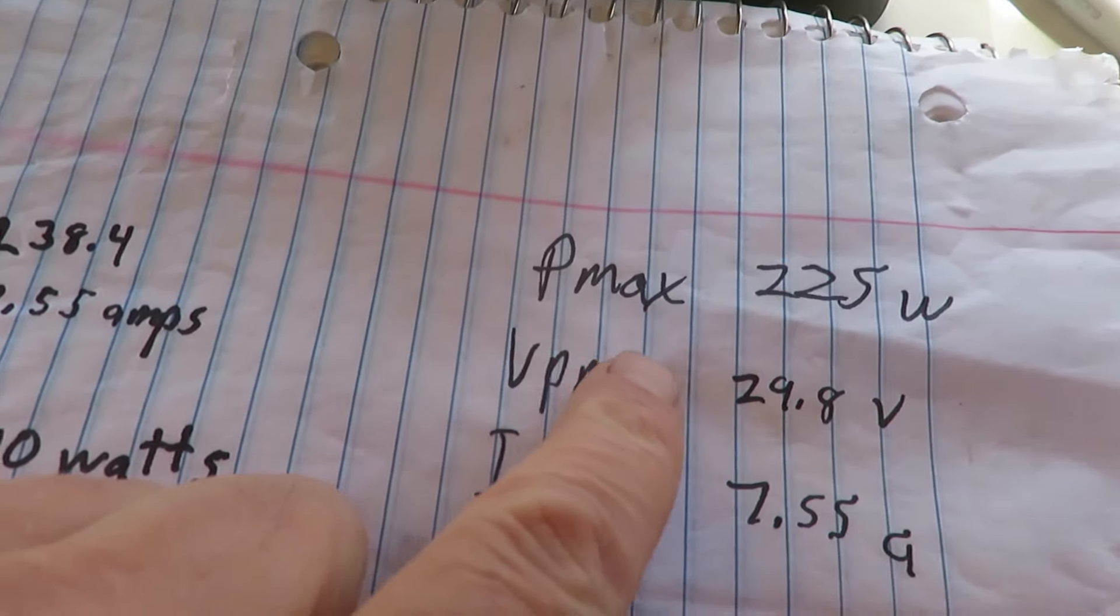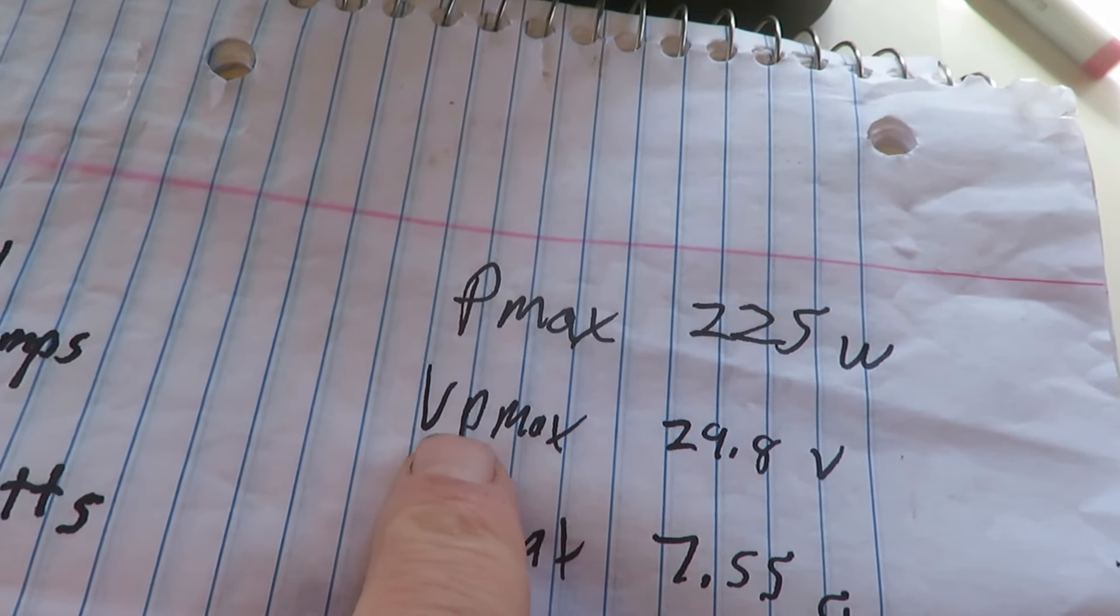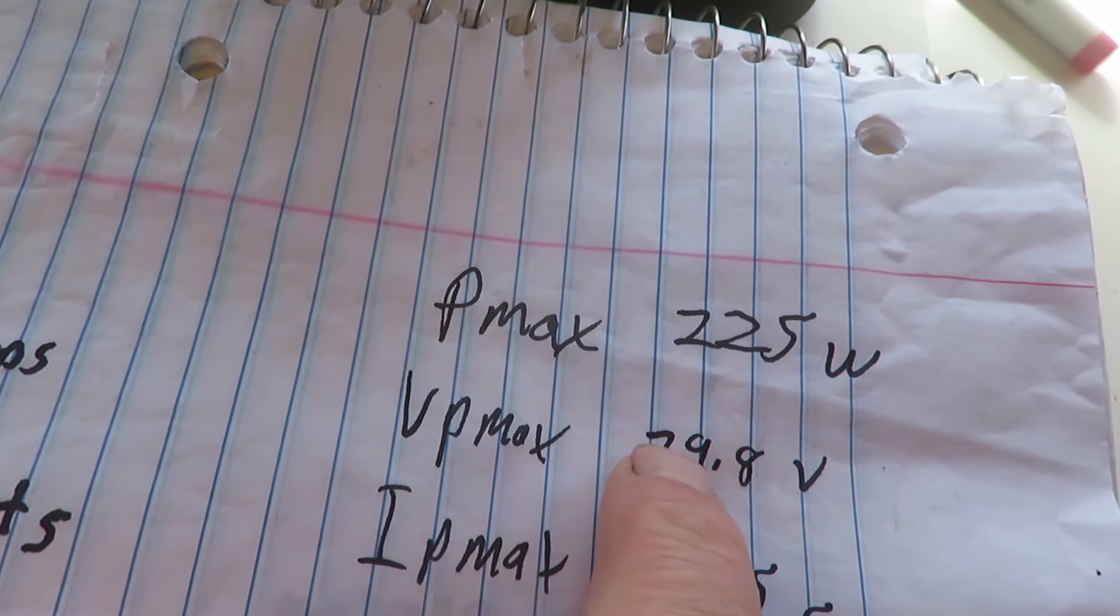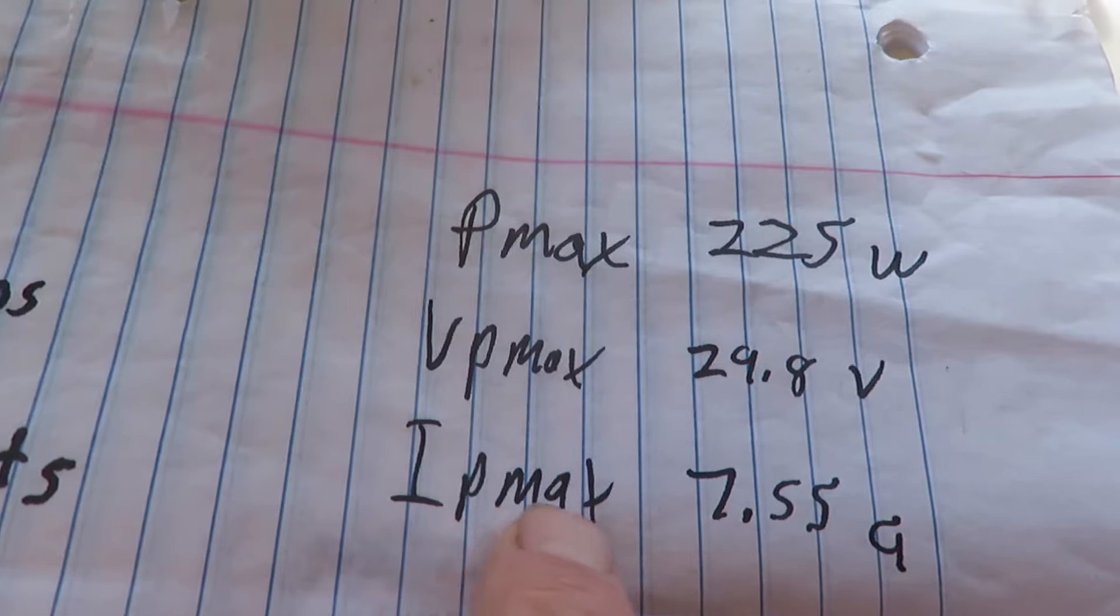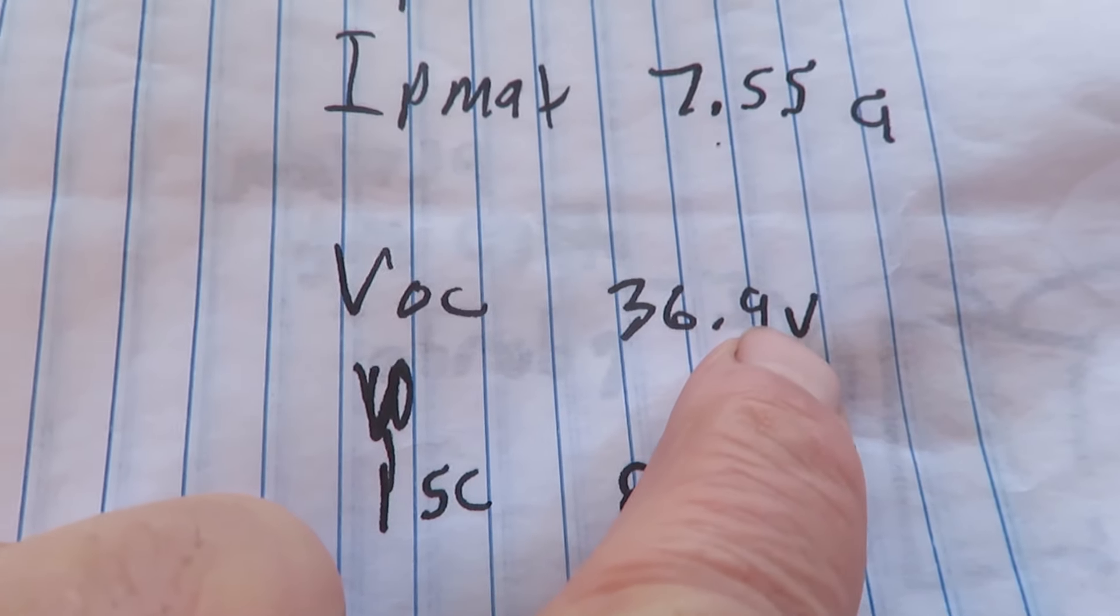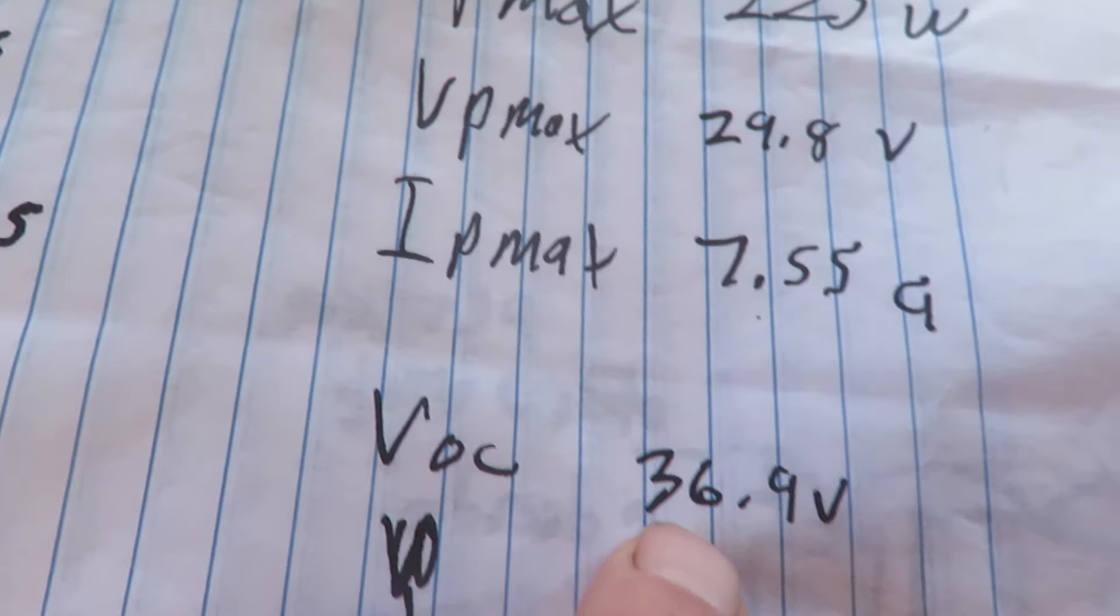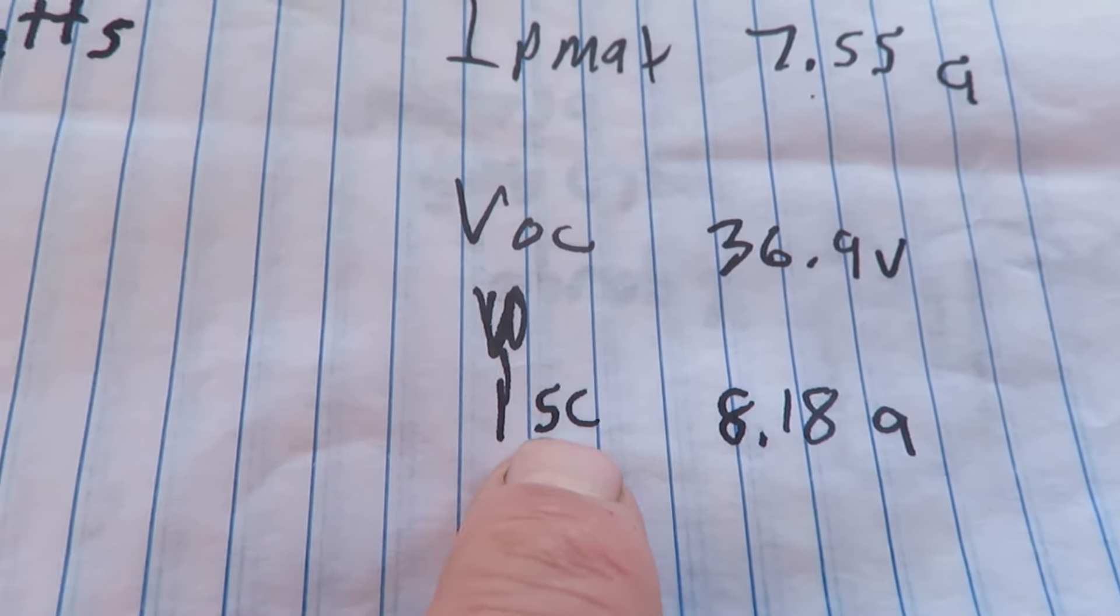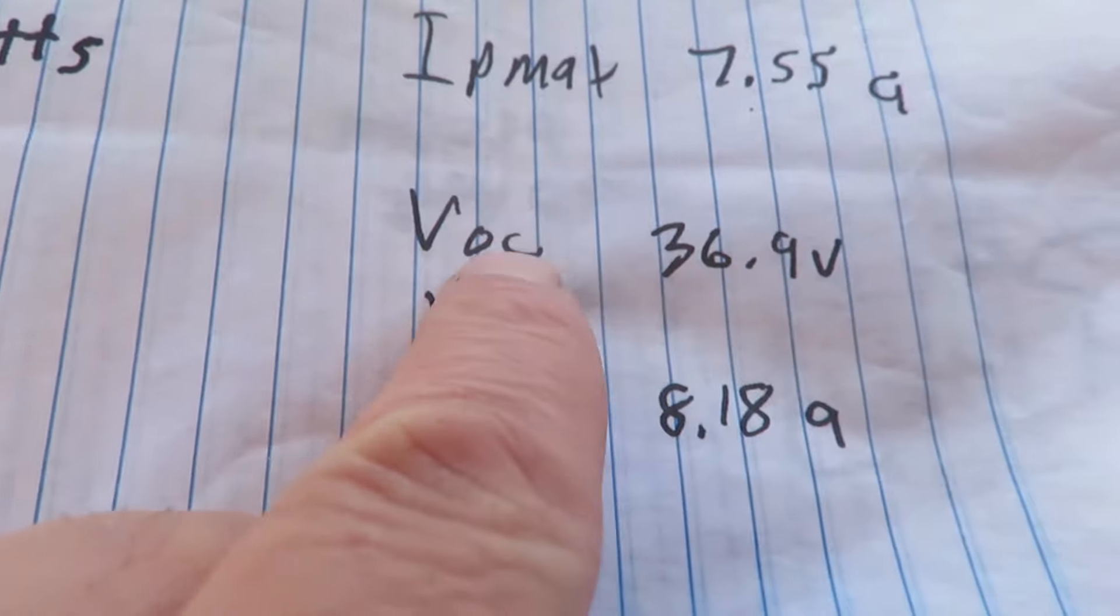Here's the specs from those eight panels going into the baseboard heater. 225 watts each, the Kyocera panels. The voltage maximum power, so when they are under load, 29.8 volts. The current maximum when they are under load, 7.55 amps. The voltage open circuit is 36.9, see quite a bit higher than this. This is what you design your controller for so you don't burn out the MOSFETs in it. And this is the short circuit current, if you just short those two wires together and put a clamp meter on there. At the maximum or open circuit, this is what you'll get.